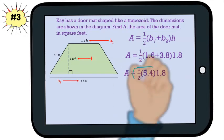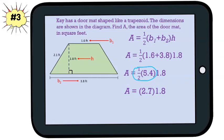Next, we'll multiply one half times 5.4, which gives us 2.7. When we multiply these two numbers, we find that the area of the trapezoid is 4.86 square feet.